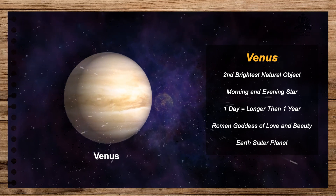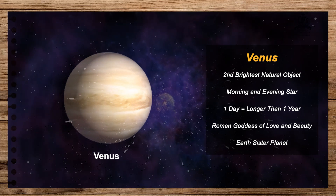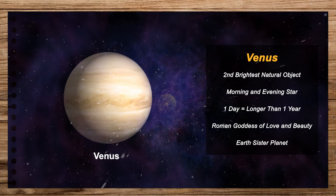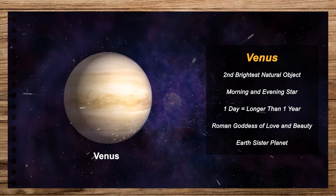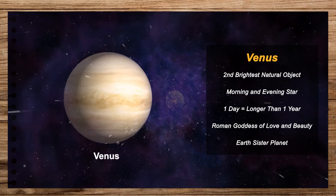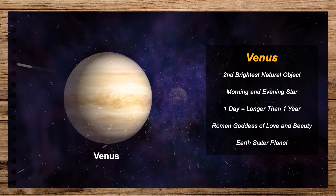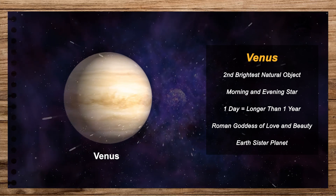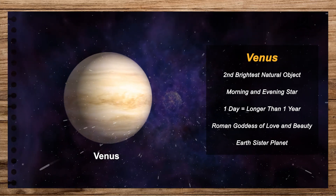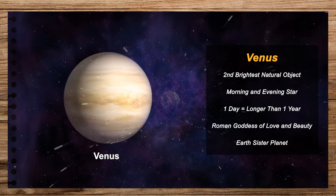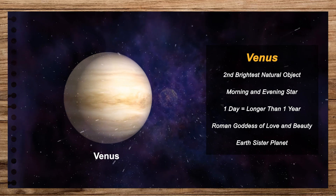Venus is named after the Roman god of love and beauty. It is the second planet from the Sun. It is almost the same size as the Earth and is known as the Earth's twin.